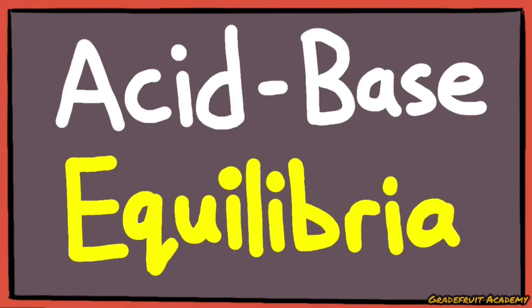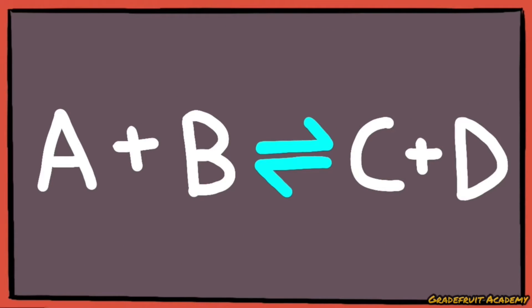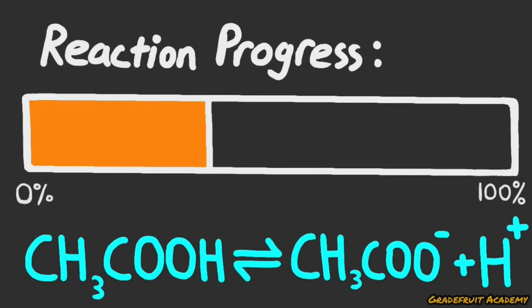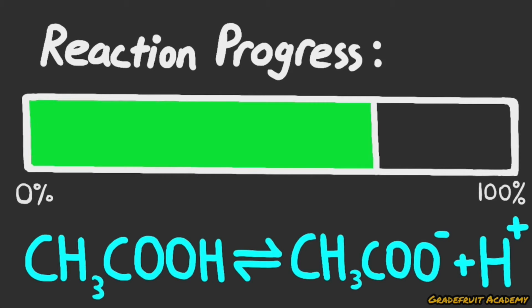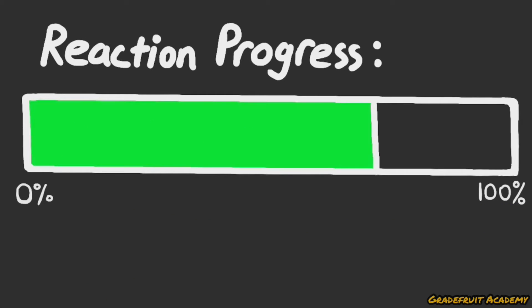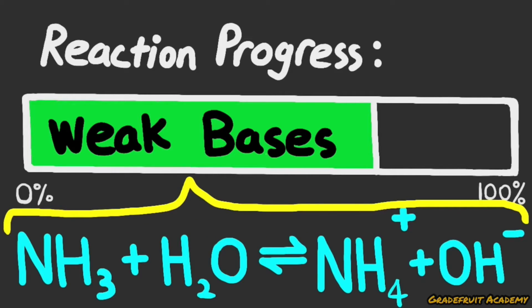As the word equilibrium suggests, there will be a reversible arrow sign in the equation because the reaction will not go to 100% completion. This means that we will be focusing more on weak acids and weak bases because they will only ionize partially in water.